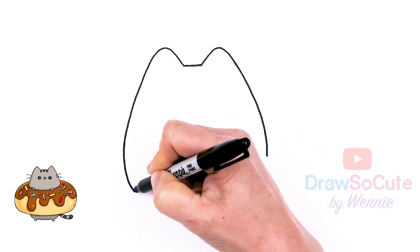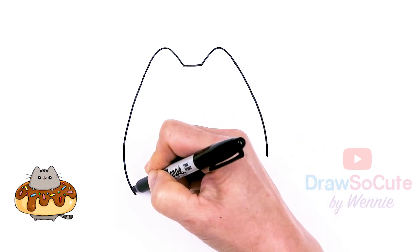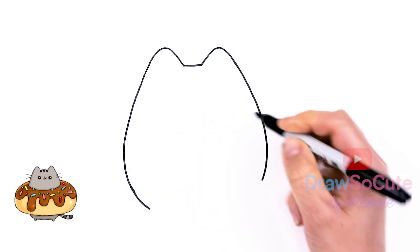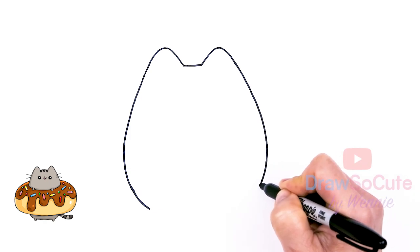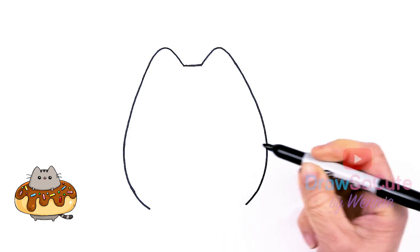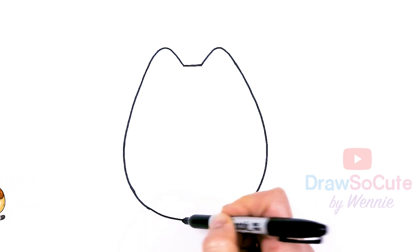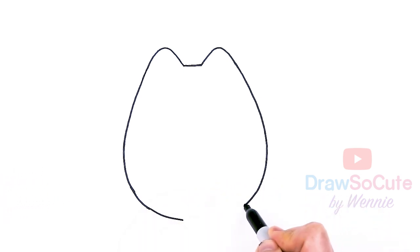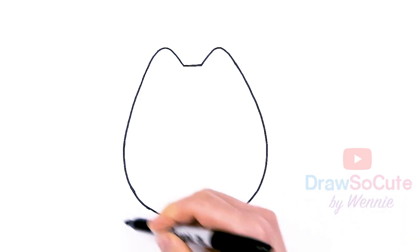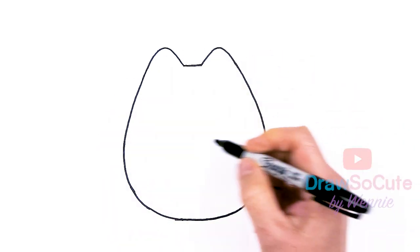And about right there, let's keep bringing this down. One nice, big, yummy, full doughnut, right? So about right there, we're going to go ahead and connect to the bottom with a curve. There, one big piece of, one big doughnut.